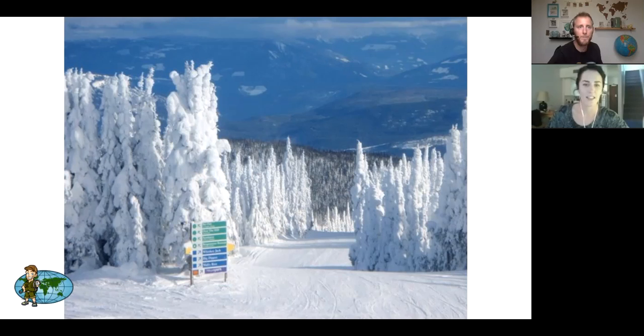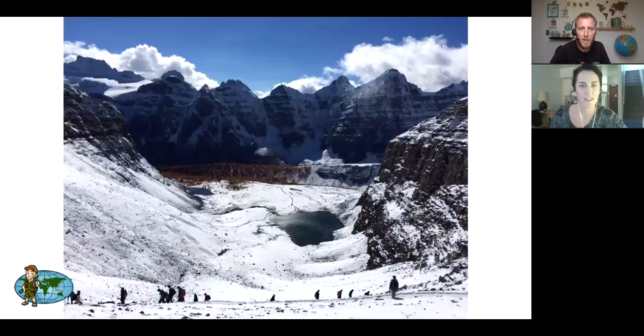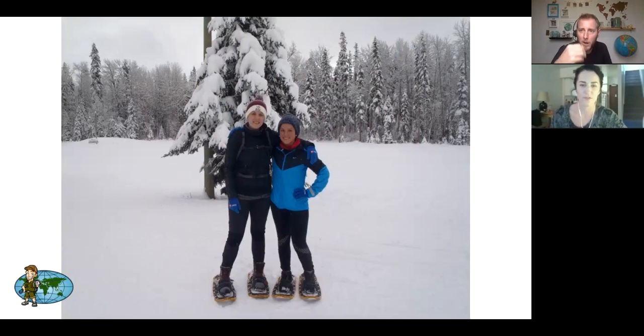Another view looking down the hill at Silver Star shows lots and lots of mountains — Vanessa believes it's in the Monashee mountain range, which is near the Rocky Mountains. The host backs up to the snowshoeing picture and, using a drawing tool to point things out, asks Mrs. Church's students what the big giant things on the people's feet are. Vanessa confirms: those are snowshoes.